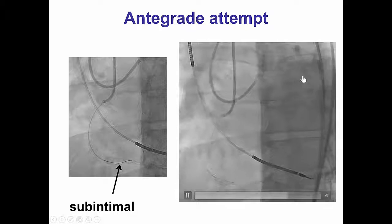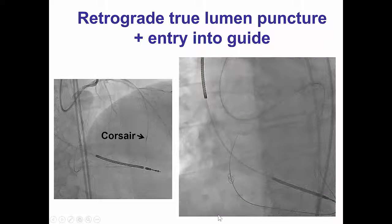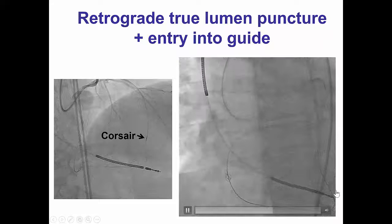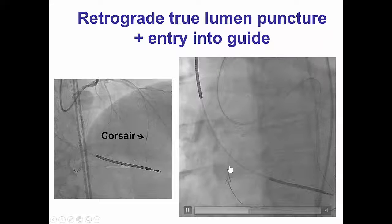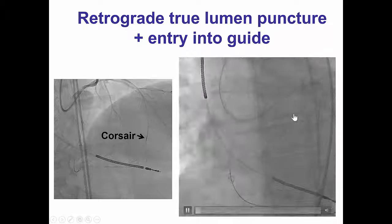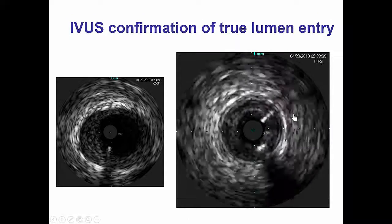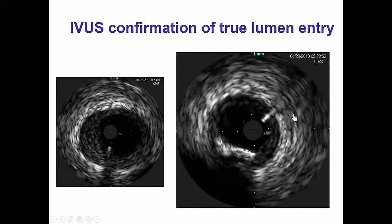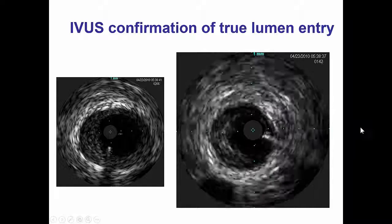Given the presence of good collaterals from the LAD, we changed to retrograde crossing. We were able to advance a Corsair retrograde into the posterior descending artery and then easily advance a retrograde guidewire into the antegrade guide catheter. Proximal true lumen position of the retrograde guidewire was confirmed with intravascular ultrasound, showing that the wire is indeed in the lumen.